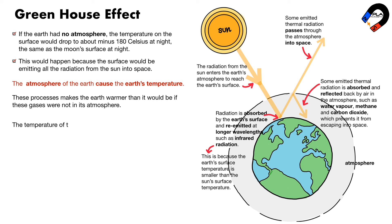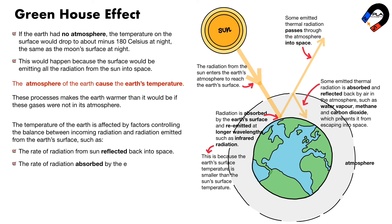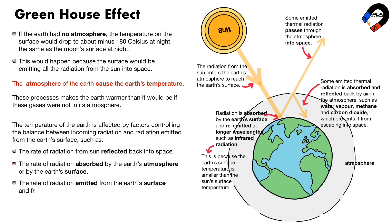The temperature of the Earth is affected by factors controlling the balance between incoming radiation and radiation emitted from the Earth's surface, such as: the rate of radiation from the sun reflected back into space; the rate of radiation absorbed by the Earth's atmosphere or by the Earth's surface; and the rate of radiation emitted from the Earth's surface and from the Earth's atmosphere into space.